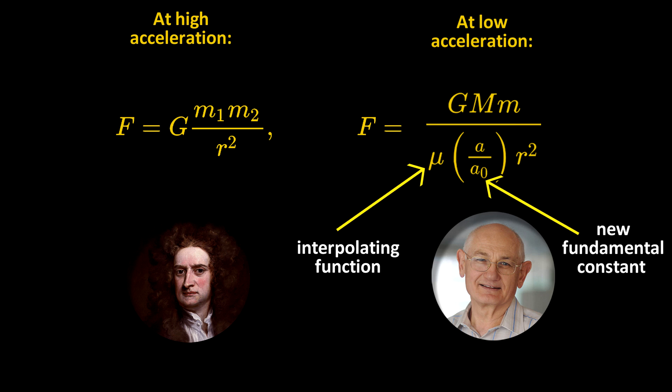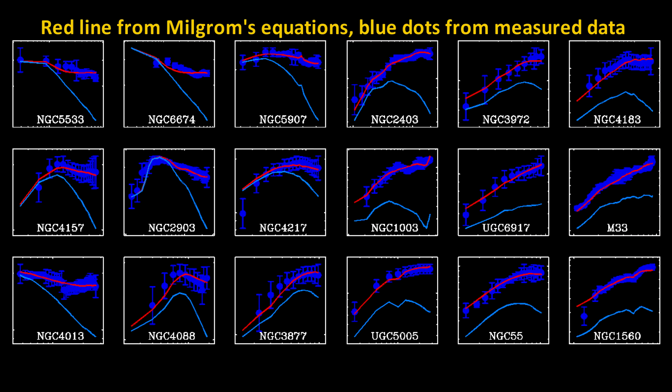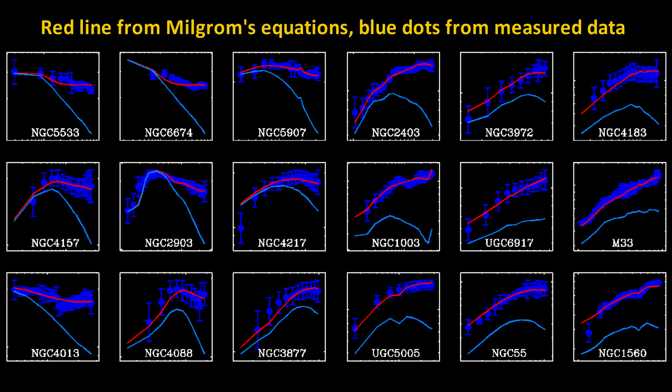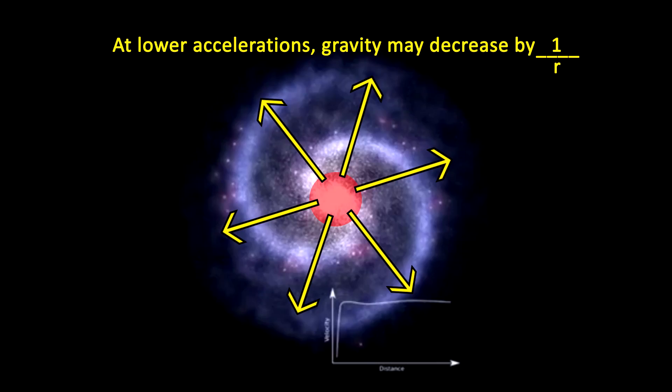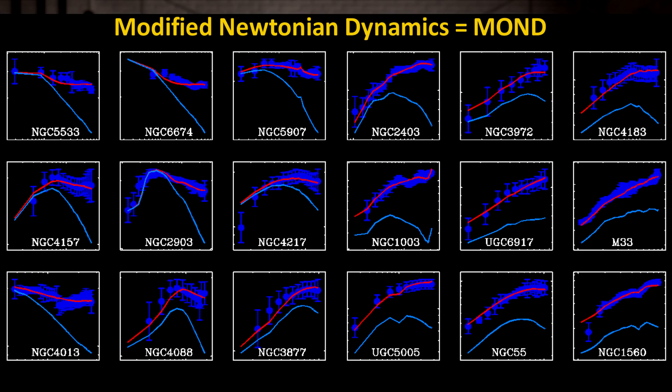Now it may have sounded crazy to make Newton's laws change this way. But the remarkable thing is that if you invoke Milgram's hypothesized modification of gravity, it fits the data like a glove, almost perfectly. It fits our observations of motions of stars, not just in our own galaxy, but dozens of other galaxies. The lines here are the predicted values, and the points with the error bars are the actual measured data points. Milgram's hypothesis is called modified Newtonian dynamics, or MOND. And as you can see from the data, it cannot be ignored.